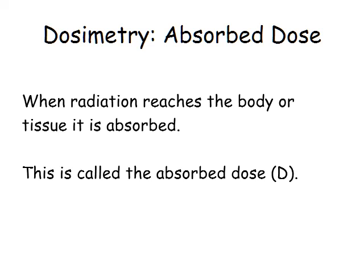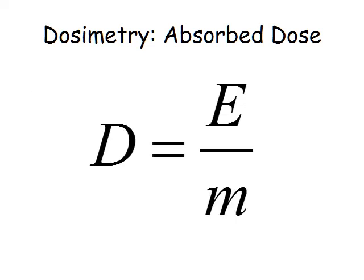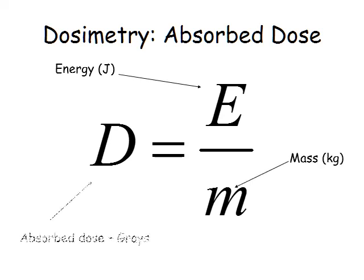Absorbed dose is the energy divided by the mass. The dose is in grays, the energy is in joules, and the mass is in kilograms. Remember the unit grays, as this is a common multiple choice question.